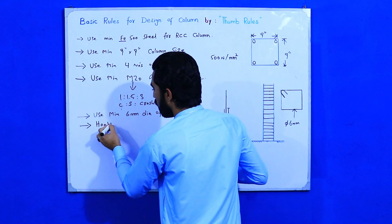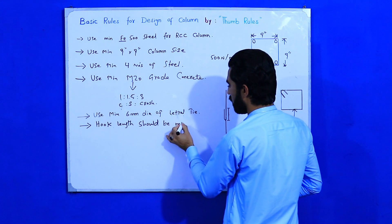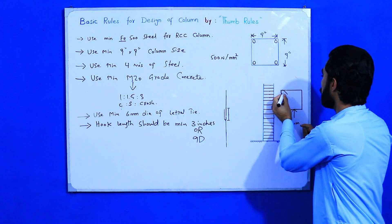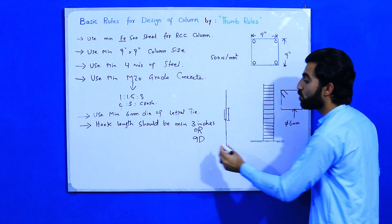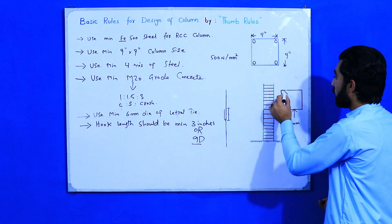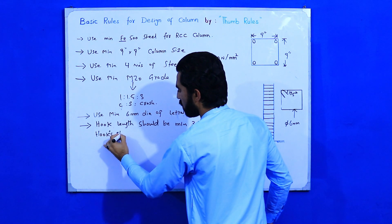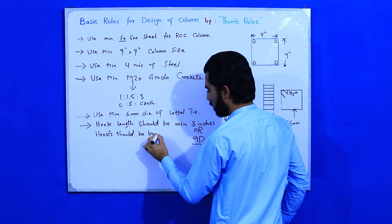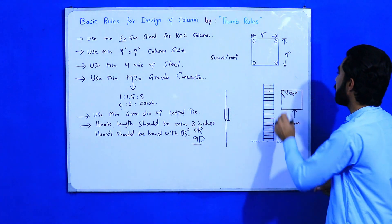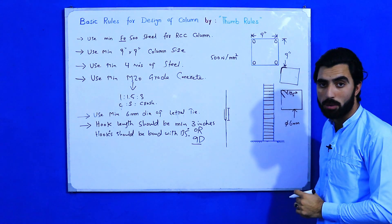For hooks, the hook length should be a minimum of 3 inches. You can use the formula 9 × dia, where the diameter of the lateral tie is 6 mm. Also, the hooks should be bent at 135 degrees — this is very important. If you do not bend the hooks at 135 degrees, you will face more problems in seismic structure design.